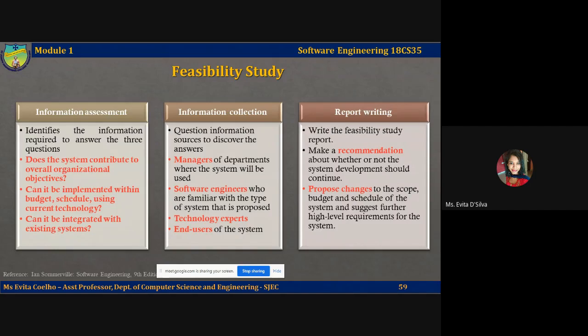The information assessment phase identifies the information required to answer the three questions: does the system contribute to overall organizational objectives; can it be implemented within the budget and schedule using current technology; and can it be integrated with existing systems. Once this information has been identified, you should then question information sources to discover the answers. Examples of the questions answered in the information collection phase include how the organization would cope if the system was not implemented at all.